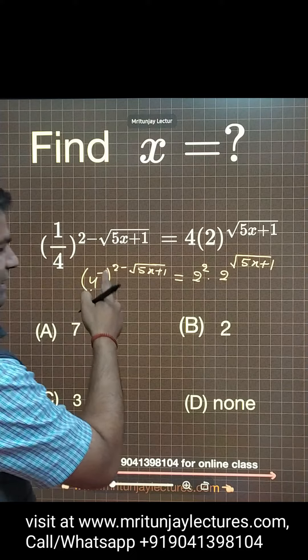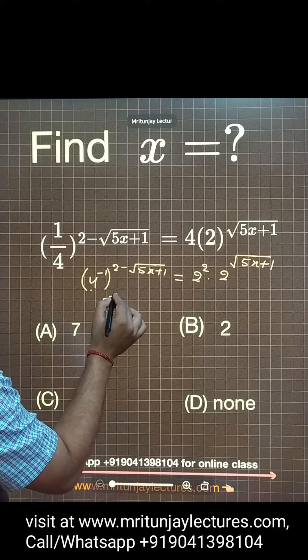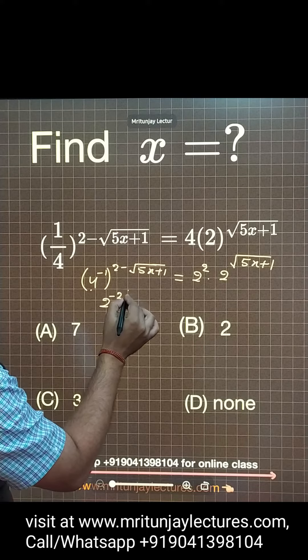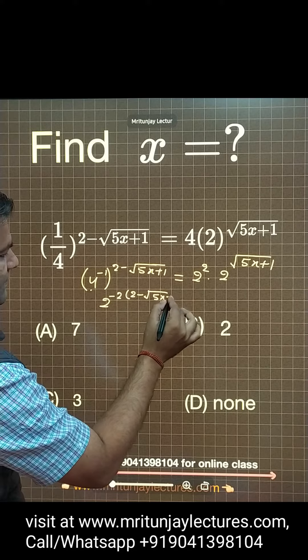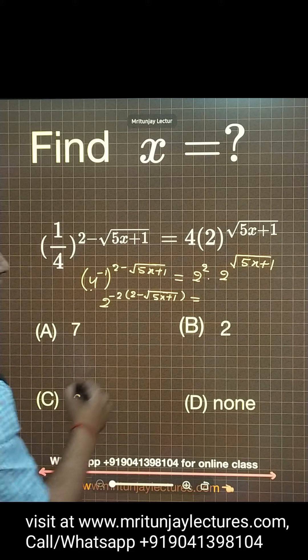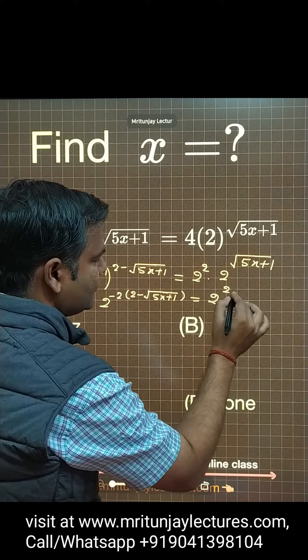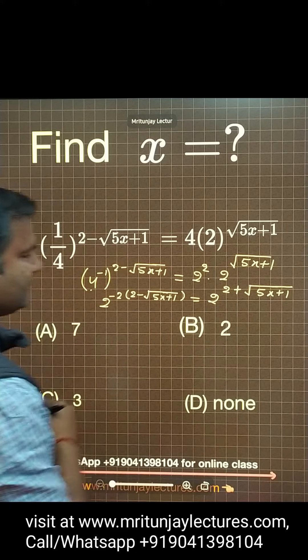So this 4 is also written as 2 to power 2. So 2 to power that is minus 2, minus 2 times 5x plus 1, this is equal to 2 plus root 5x plus 1, like that one.